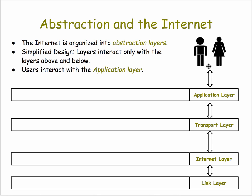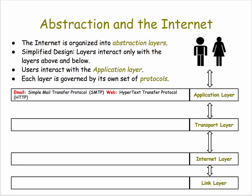Users are only going to be interacting with the application layer, so that's all we see. What's at the application layer? There are things like email or browsing on the web. Examples of protocols used at this layer are the Simple Mail Transfer Protocol, or SMTP, and the HTTP protocol, which we learned about in a previous lesson. Those are two examples of applications that we interact with as users of software on the internet.